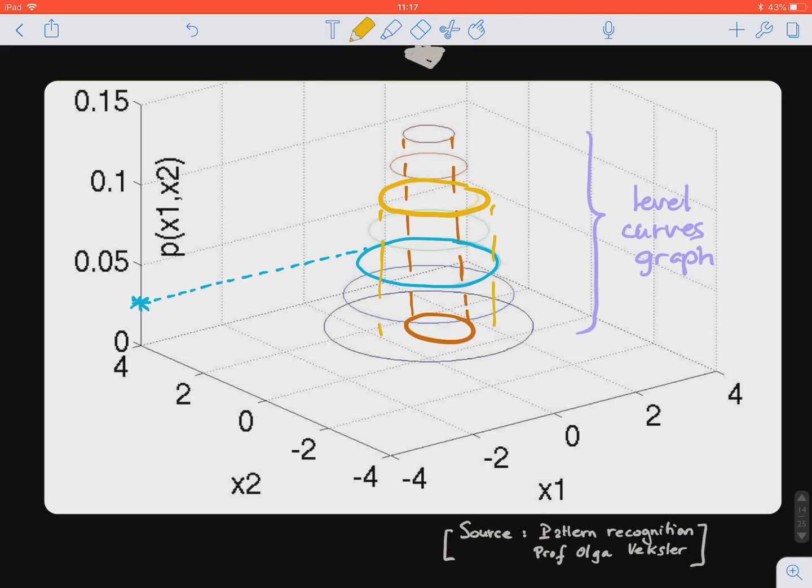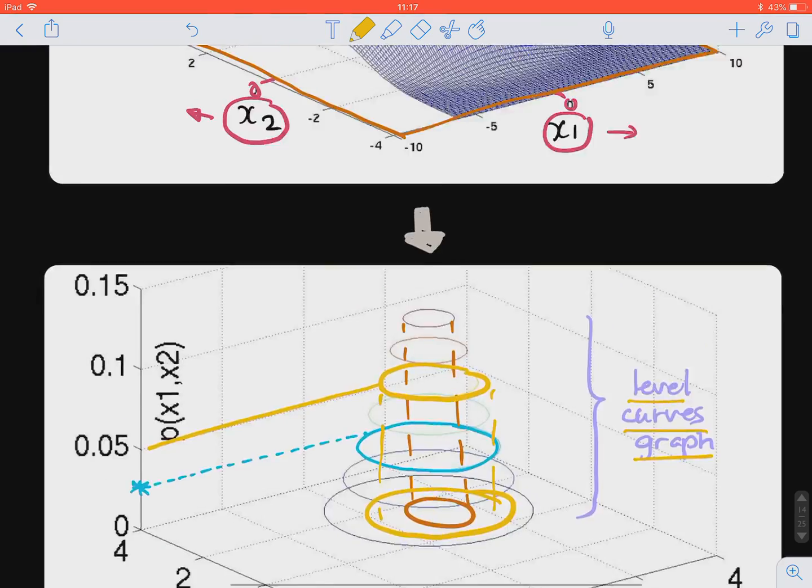So we do, we're projecting them onto this space. And remember, each ring or each circle has a constant probability, joint probability of observing x₁ and x₂. So we call these the level curves graph, and they enable us to easily understand the covariance of these two features or these two variables.